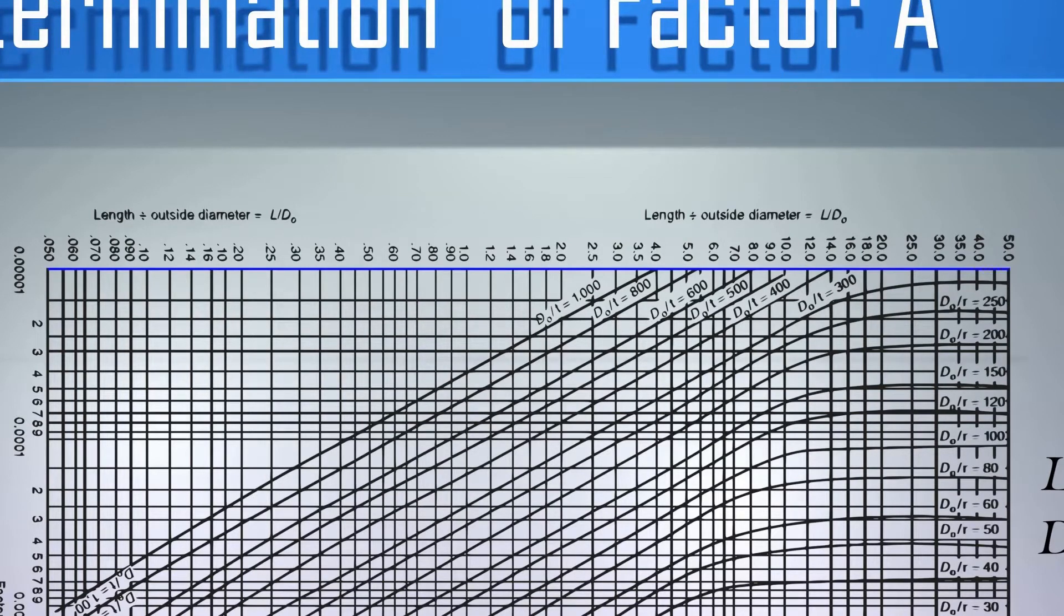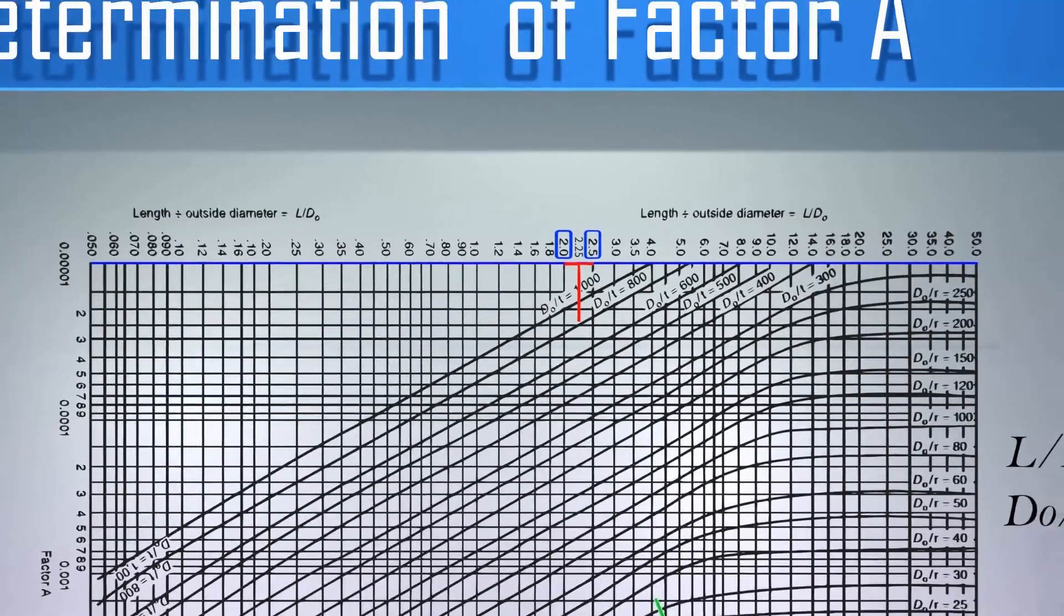We have to spot 2.25 on this line. It is between 2 and 2.5. The midpoint of these two values would be 2.25. Draw a line from this in downward direction.